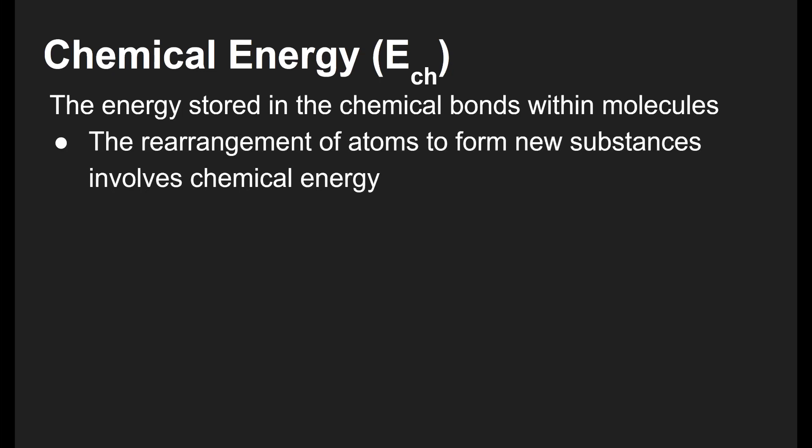And then finally is chemical energy. Now, this is the energy that is in the chemical bonds between the molecules. Now, saying stored in the bonds is a little problematic. We'll talk about this later this year. It's not like there's sort of a magical burst of energy in chemical bonds. But what there is, is potential energy in those chemical bonds. And when we rearrange atoms in a molecule to form new substances, this is chemical energy. So we're not going to be talking about chemical energy this unit. In this unit, we're just going to focus on thermal and phase energy. But in a couple units down the road, when we start talking about chemical reactions, we'll come back to this and learn more about chemical energy.